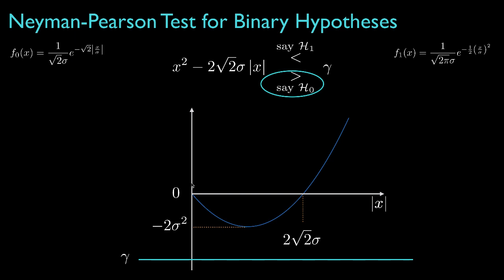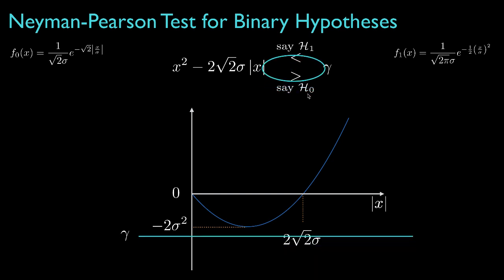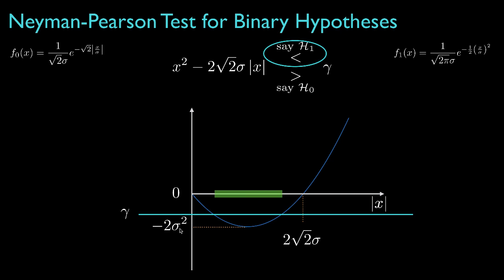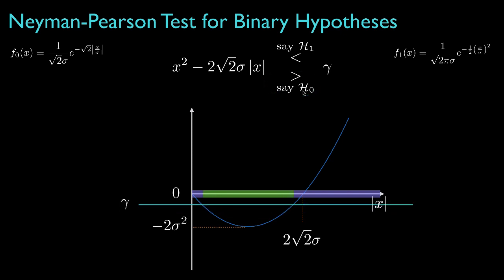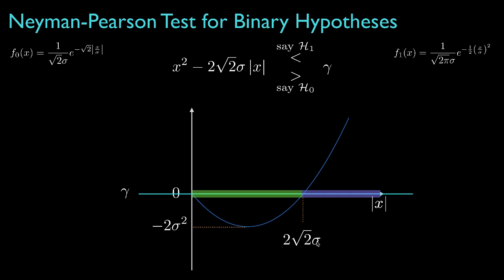The minimum value of this function is negative two times sigma squared, and it crosses back above zero at two times the square root of two times sigma. Because of this shape, any threshold smaller than negative two sigma squared will classify all data as hypothesis 0. When the threshold is between negative two sigma squared and zero, there is a region classified as hypothesis 1 and a surrounding region still classified as hypothesis 0. That region classified as hypothesis 1 expands as the threshold grows toward zero, and when the threshold equals zero, the region spans from zero to two times the square root of two times sigma.